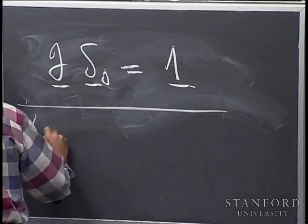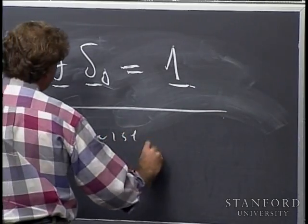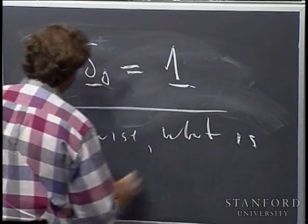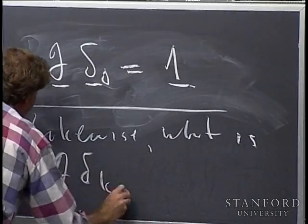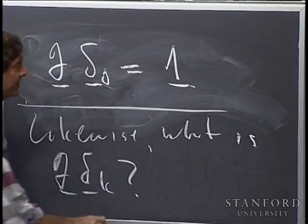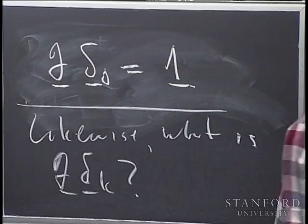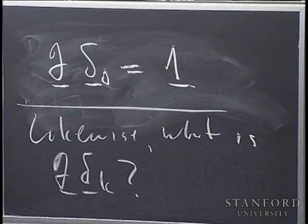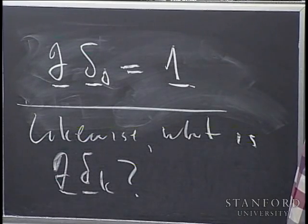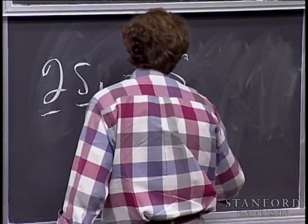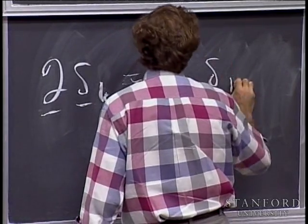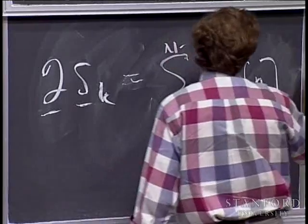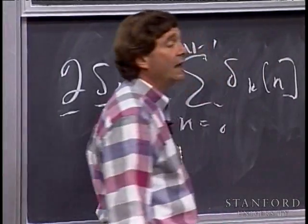Likewise, what is the Fourier transform of the shifted delta function? Again, we have no recourse other than to work with the definition. The Fourier transform of the shifted delta function is the sum from N equals 0 to N minus 1 of the nth component of the shifted delta, times omega to the minus n.